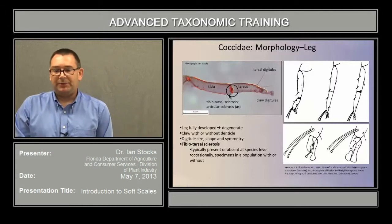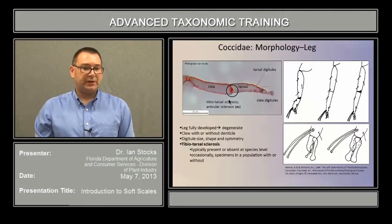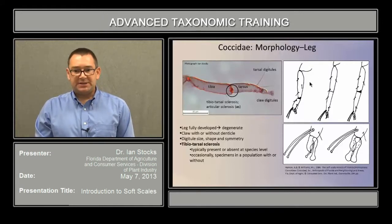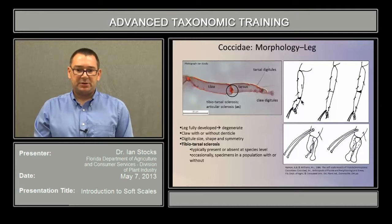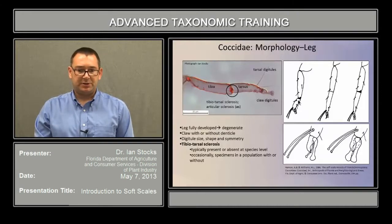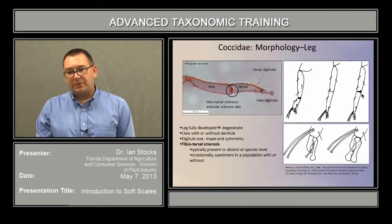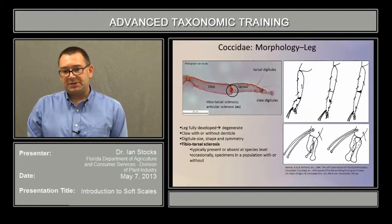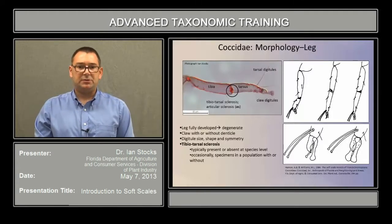The tibiotarsal sclerosis is typically present or absent at the species level, but occasionally you can find specimens within a population where some have it and some are lacking it. It has several conditions: the tibiotarsal sclerosis with full articulation, so the tarsus is free to move about the joint; one with a tibiotarsal sclerosis but generally lacking free articulation; and in the middle, no sclerosis at all, where the tarsus is essentially rigidly fused to the tibia.